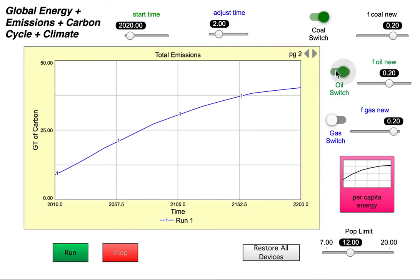we're going to turn on all the switches. We're going to set the new fraction to 0.15. That would be 15% for each of these. So that's a decent reduction in our reliance on fossil fuels.